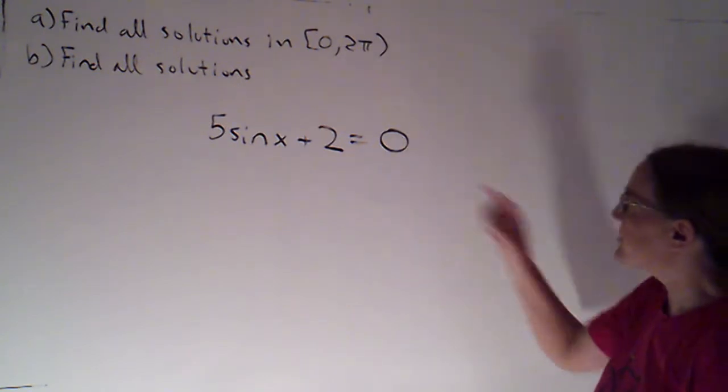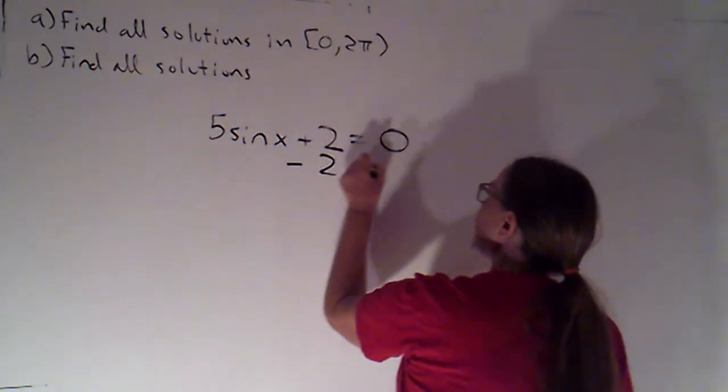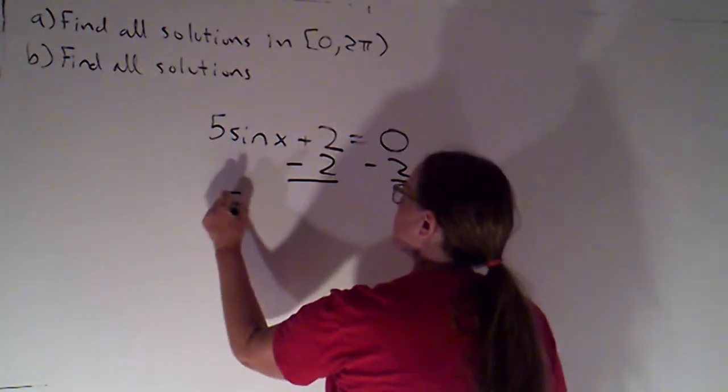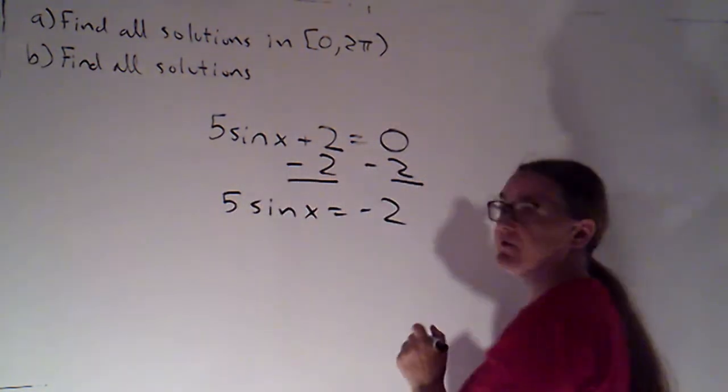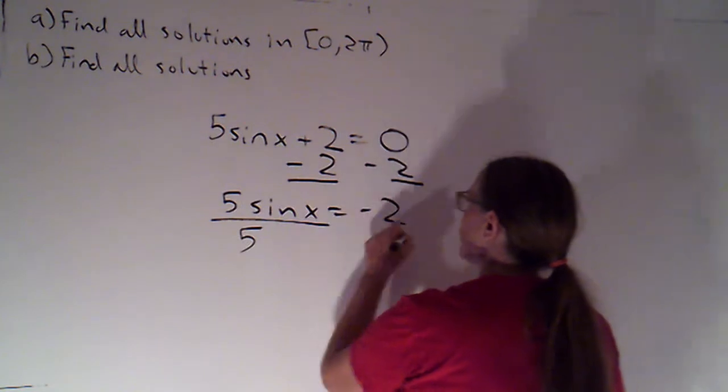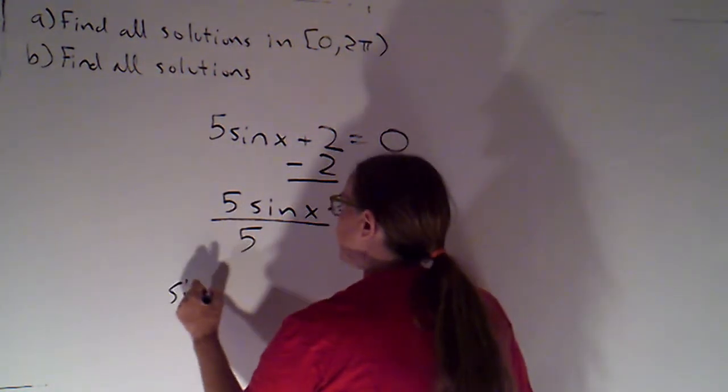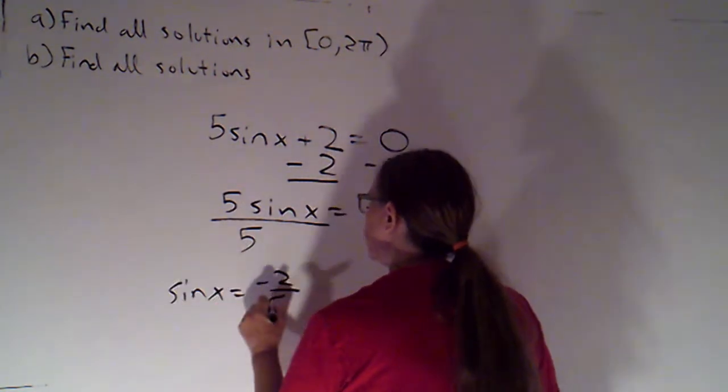Okay, so first thing I want to do is just isolate that trig function. So I'll subtract over that 2, so 5 sine x equals negative 2, and then we can divide both sides by 5, and so sine x is equal to negative 2 fifths.